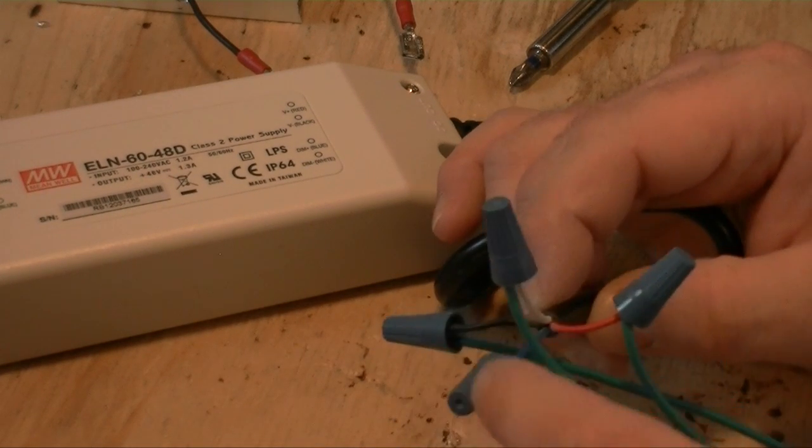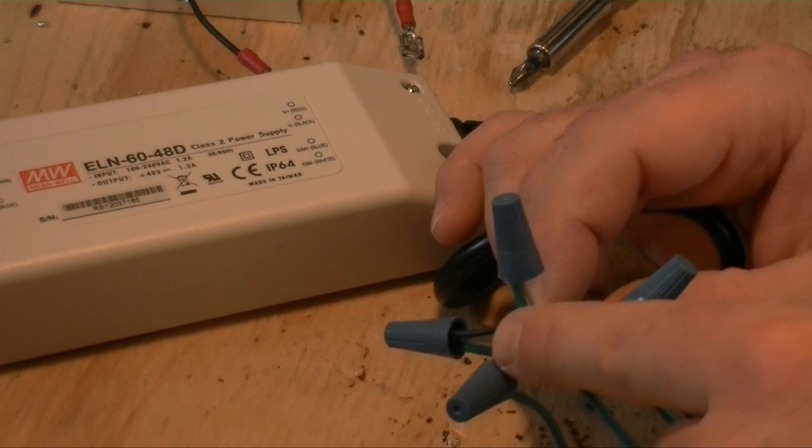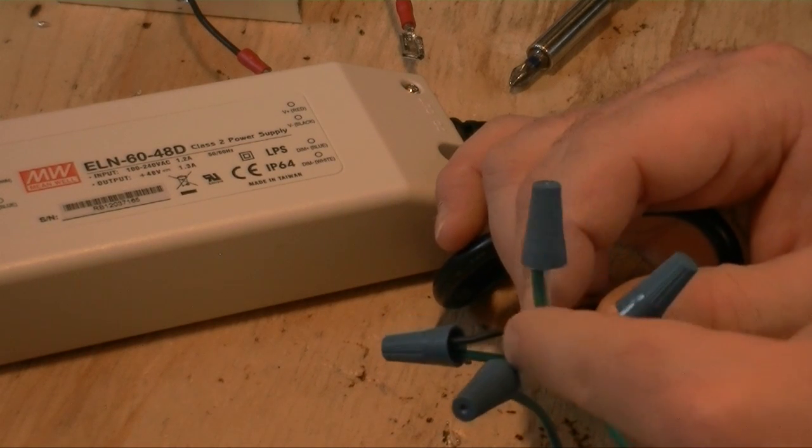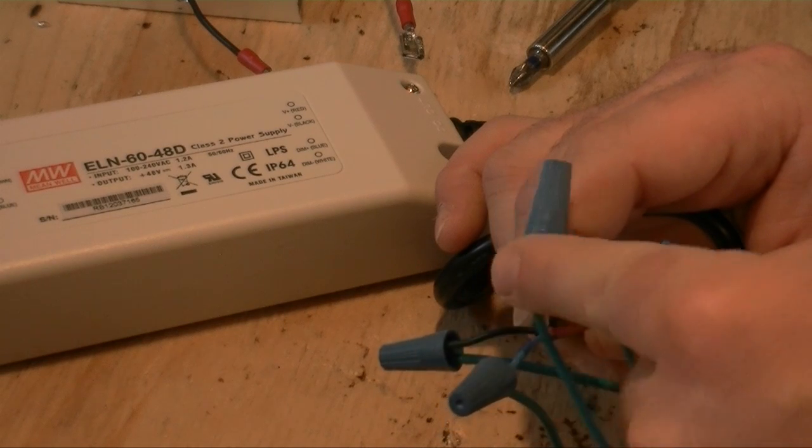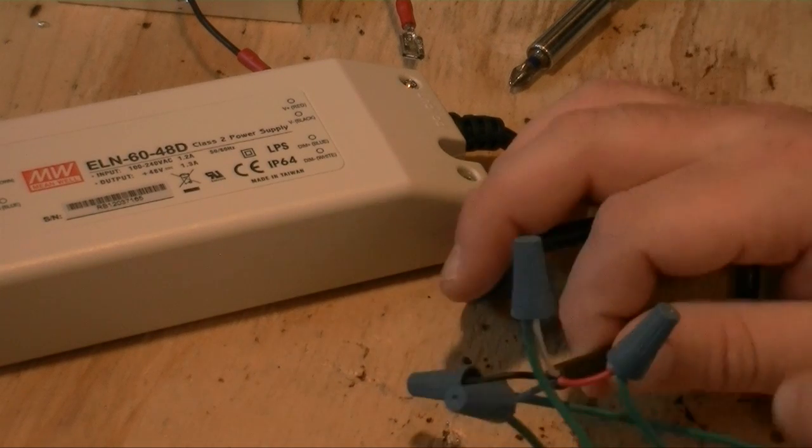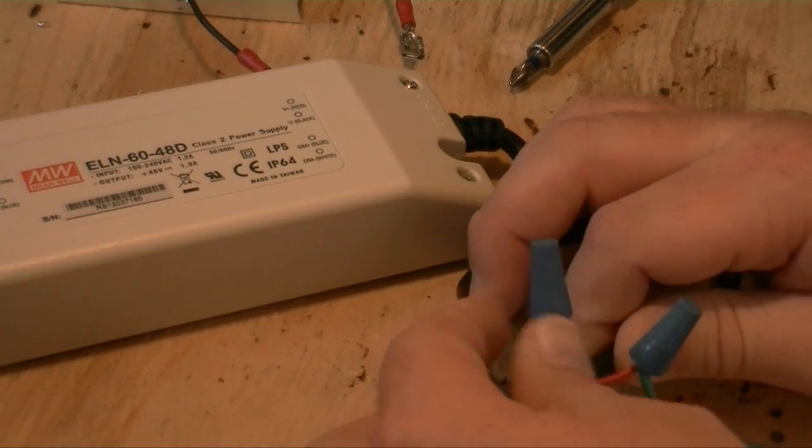White goes to your dimming control, your pot or your Apex controller dimming negative. Blue goes to your dimming positive. Pretty simple stuff. Let me give you a quick verbal explanation.